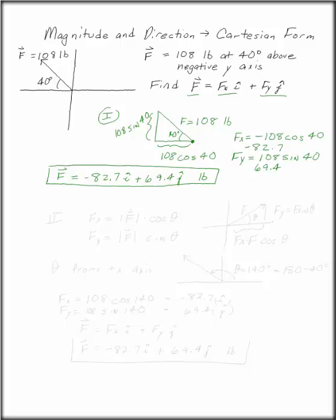Alternately, it is possible to always say Fx is the magnitude of F times cosine theta and Fy is the magnitude of F times sine theta.